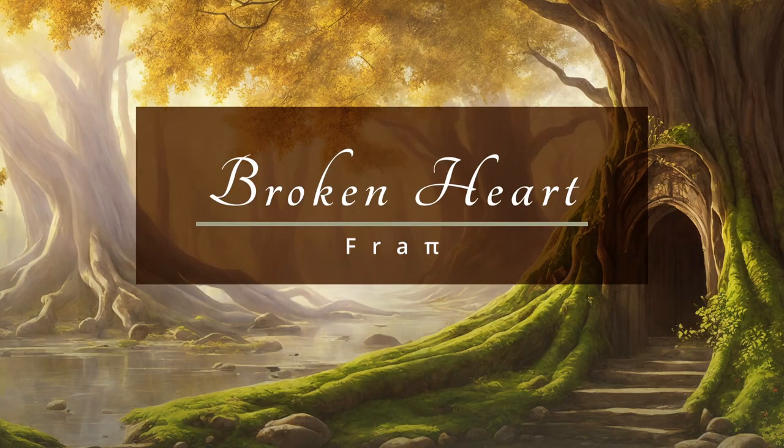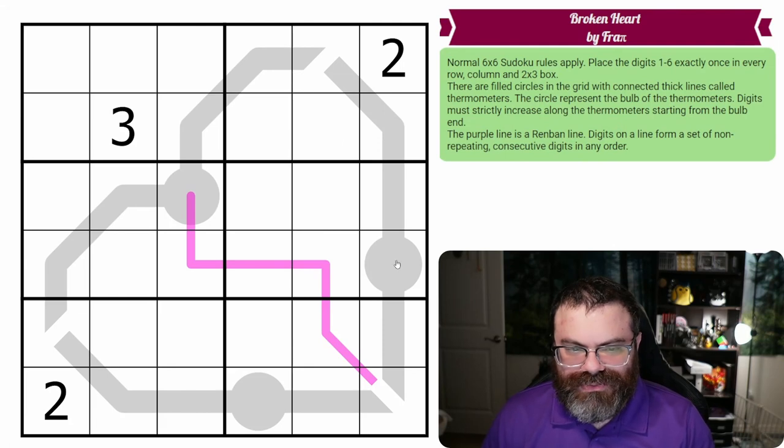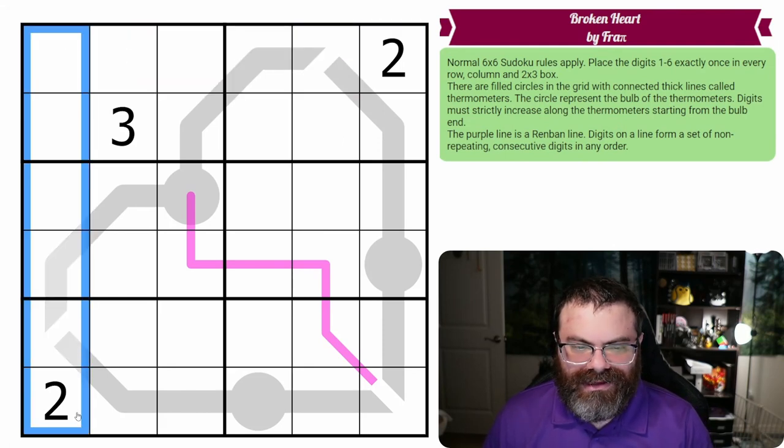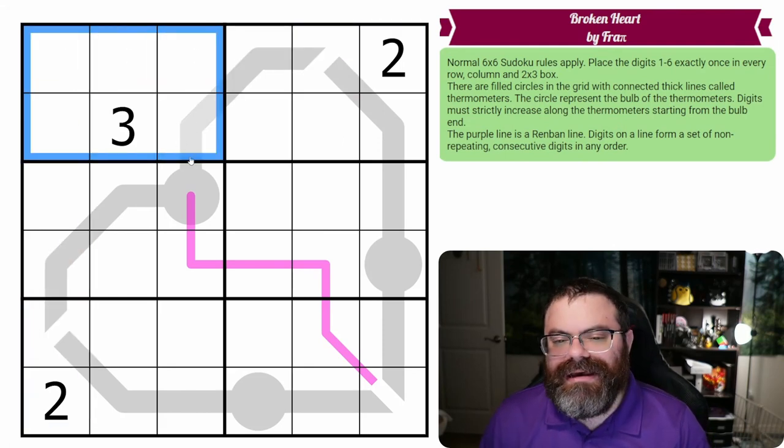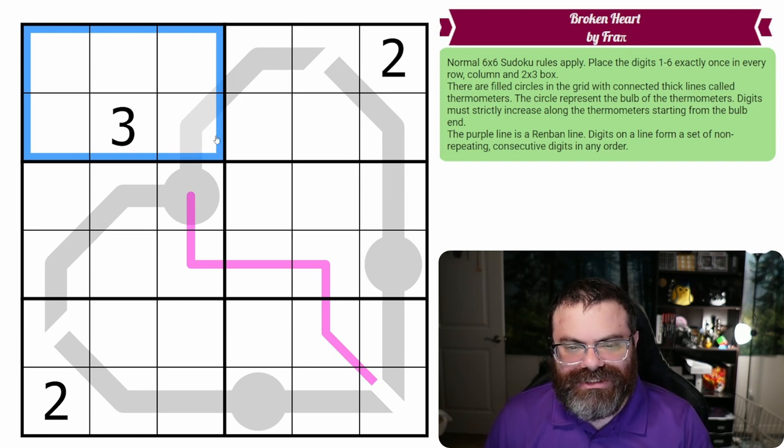Hello, let's continue our Sudoku adventure with Broken Heart by Frappy. We have normal 6x6 Sudoku rules - in every row, every column, and every 2x3 box, we are placing the digits 1 to 6 exactly once each.